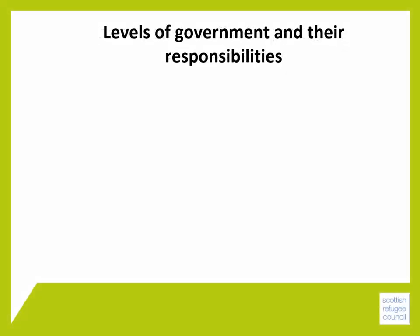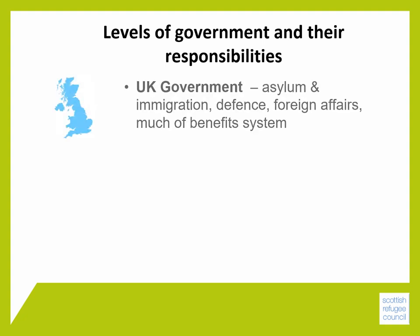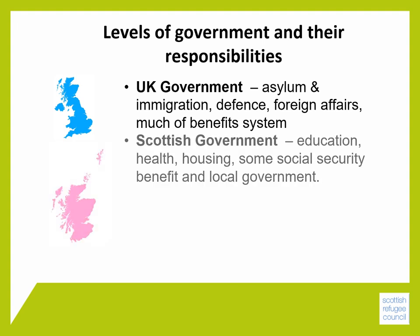Let's now look at levels of government in the UK and their responsibilities. The UK government is responsible for asylum and immigration, as well as defence, foreign affairs, much of the benefit system and a range of other things. The Scottish government is responsible for education, health, housing, some social security benefits and local government.